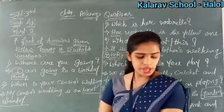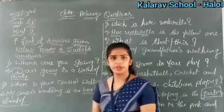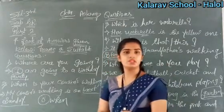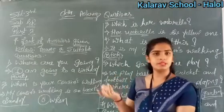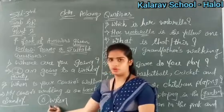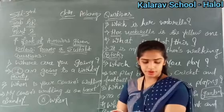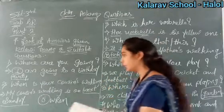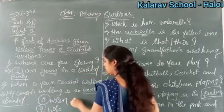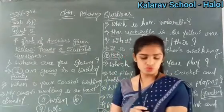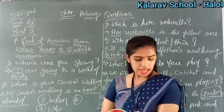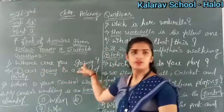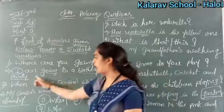The eighth number answer is: 'The program will begin at 10 o'clock.' It is showing a time, so we use 'When.' Question: When will the program begin? Ninth number: 'Lata gave us the wrong address.' We are talking about a person, so we use 'Who.' Question: Who gave the wrong address? Tenth number: 'I am going to the market to buy some butter.' Again talking about a place, so: Where are you going? Answer: I am going to the market to buy some butter. Understood?